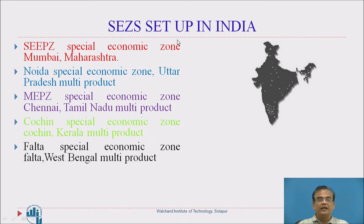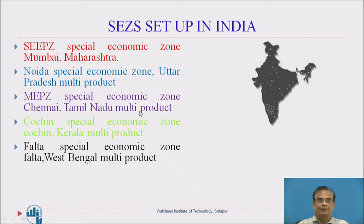The SEZs set up in India include: Special Economic Zone in Mumbai, Maharashtra (SWEPZ); Noida Special Economic Zone, Uttar Pradesh (multiproduct); MEPZ Special Economic Zone, Chennai, Tamil Nadu (multiproduct); Cochin Special Economic Zone, Cochin, Kerala; and Falta Special Economic Zone, Falta, West Bengal.